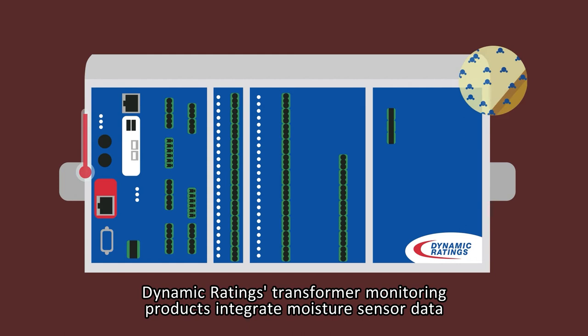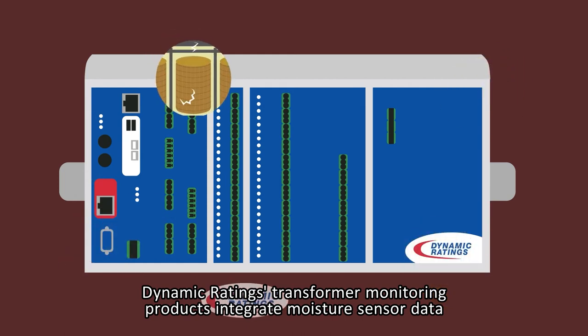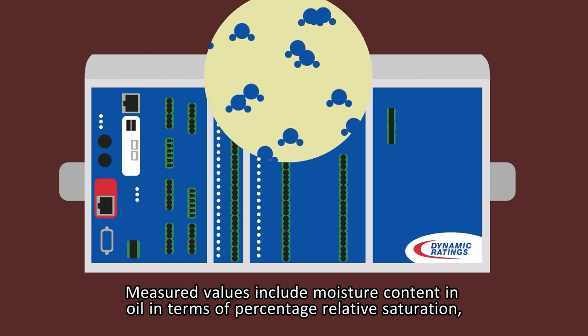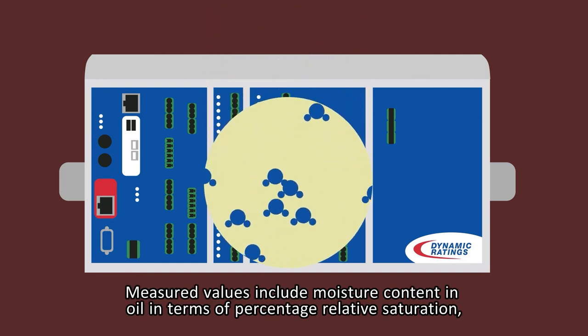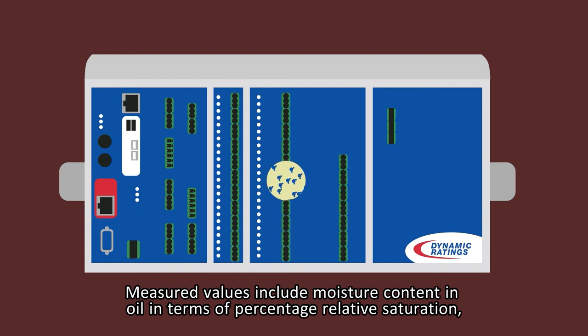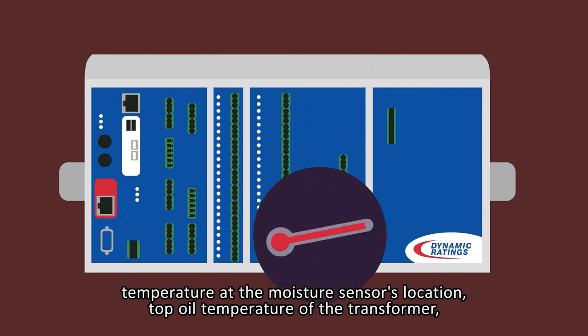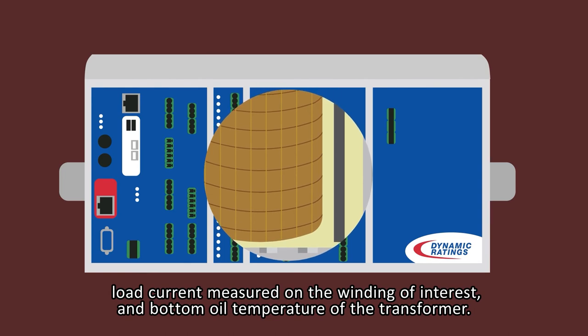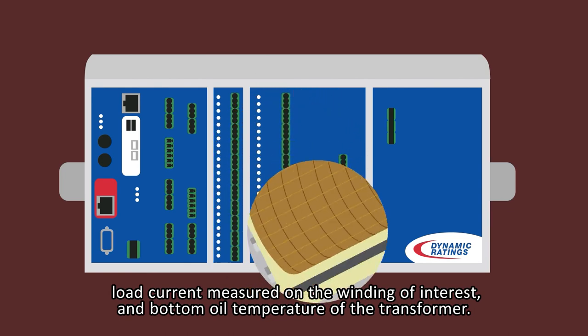Dynamic Ratings transformer monitoring products integrate moisture sensor data and other parameters as part of the moisture management model. Measured values include moisture content in oil in terms of percentage relative saturation, temperature at the moisture sensor's location, top oil temperature of the transformer, load current measured on the winding of interest, and bottom oil temperature of the transformer.